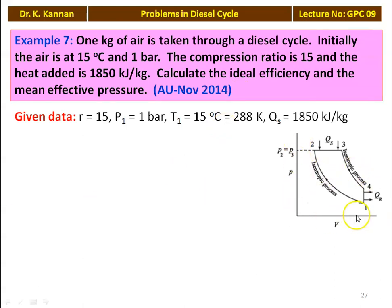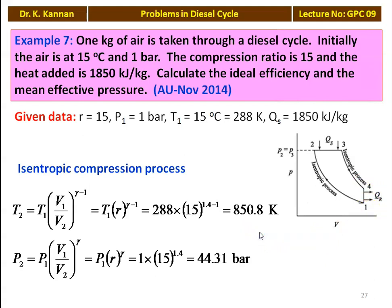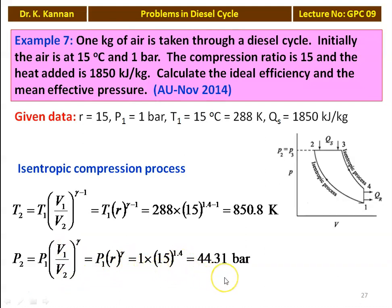We draw the PV diagram of the Diesel cycle: 1 to 2 isentropic compression, 2 to 3 constant pressure heat addition, 3 to 4 isentropic expansion, and 4 to 1 constant volume heat rejection. For the isentropic compression process, T2 equals T1 into R to the power gamma minus 1: 288 into 15 to the power 0.4 equals 850.8 Kelvin. Pressure P2 equals P1 into R to the power gamma: 1 into 15 to the power 1.4 equals 44.31 bar.